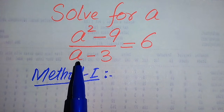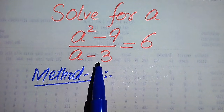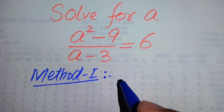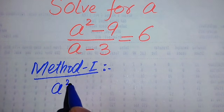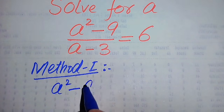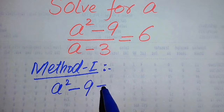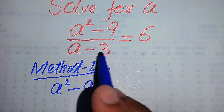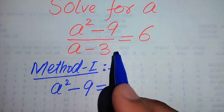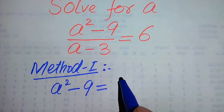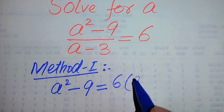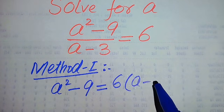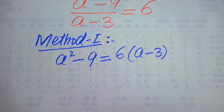In the first method, we move a minus 3 from the left hand side to the right hand side. It will be written as a² minus 9 equals, and when we move this to the right hand side it is multiplied by 6, giving us 6 times of a minus 3.